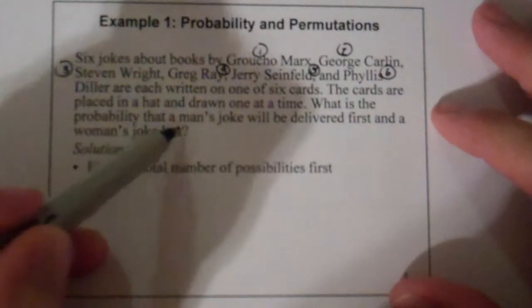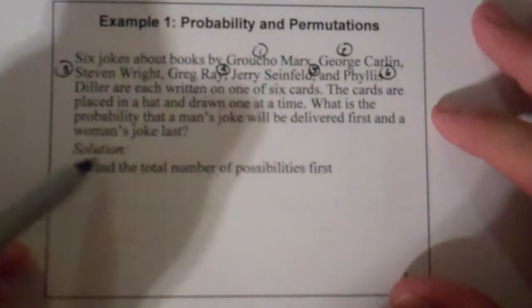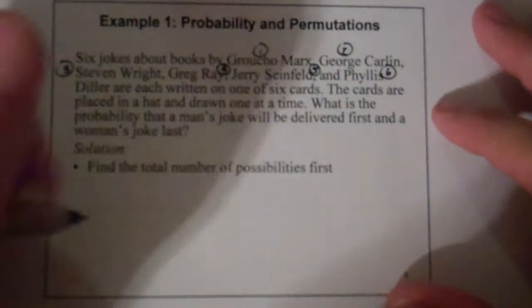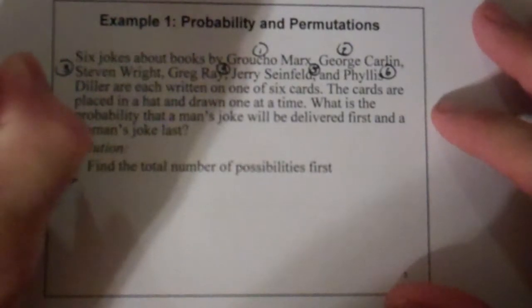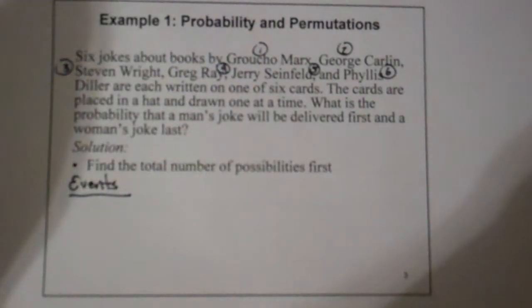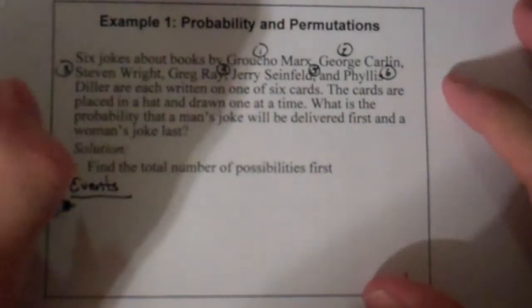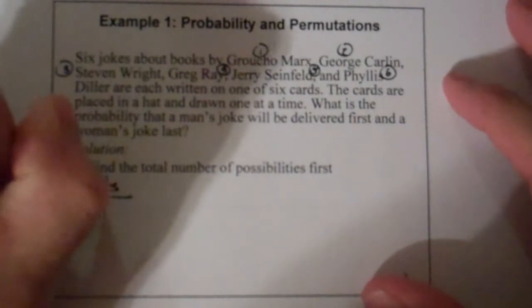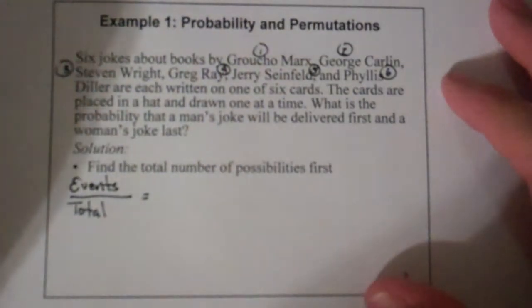What is the probability that a man's joke will be delivered first and a woman's joke last? So what we want to do is find the events that we're looking for, how many possible events could happen that we're looking for, out of the total number of events that are possible.